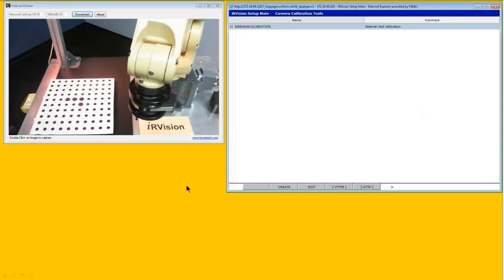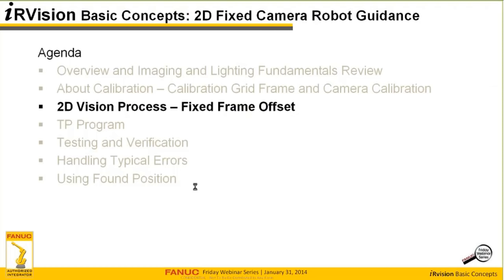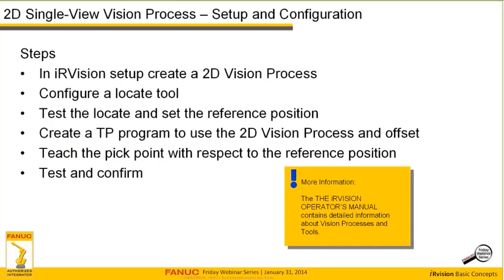Where do we go from here? We're going to create a 2D fixed camera and single view vision process using fixed frame offset. Steps going forward: in our vision setup, create a 2D vision process, configure a locate tool, test that location, and set a reference position — very important, and we'll talk about that in a bit. Then we'll create a TP program to use that process and offset, teaching the pick point with respect to the reference position, and test and confirm our overall pick process.